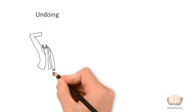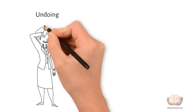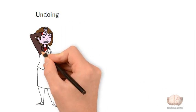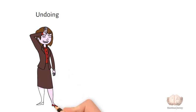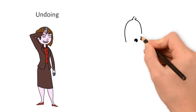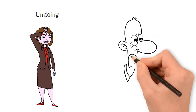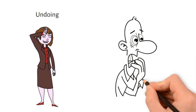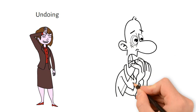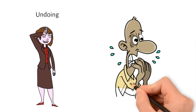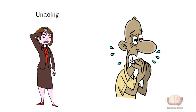Undoing: trying to undo or atone for unacceptable thoughts, feelings, or behaviors. For example, compulsively washing hands after thinking something taboo. While considered more mature and adaptive than the previous levels, these neurotic defenses still represent unconscious coping strategies that allow us to avoid dealing directly with reality. They are very common responses to anxiety, stress, and inner conflict.